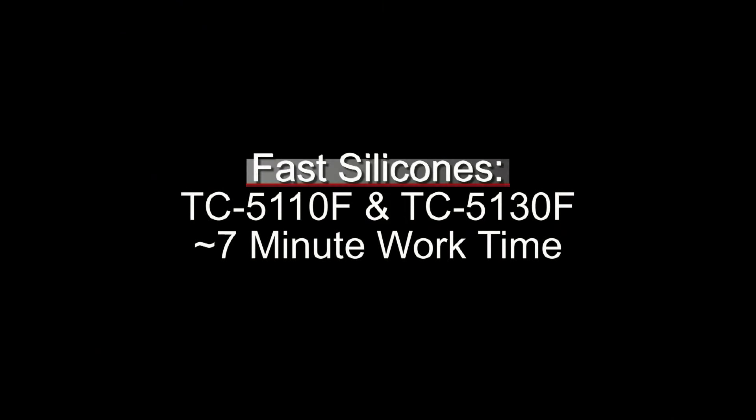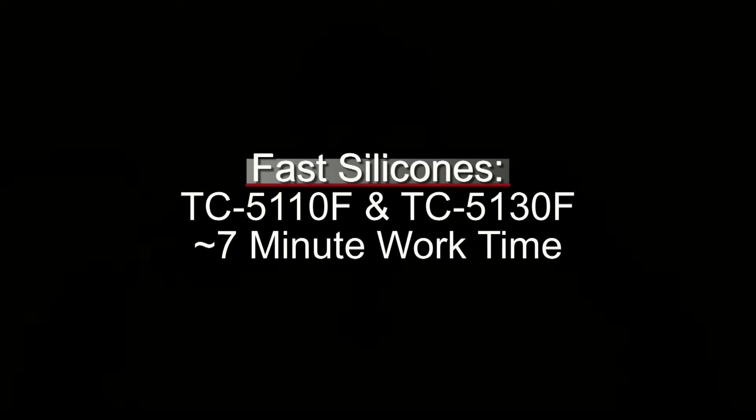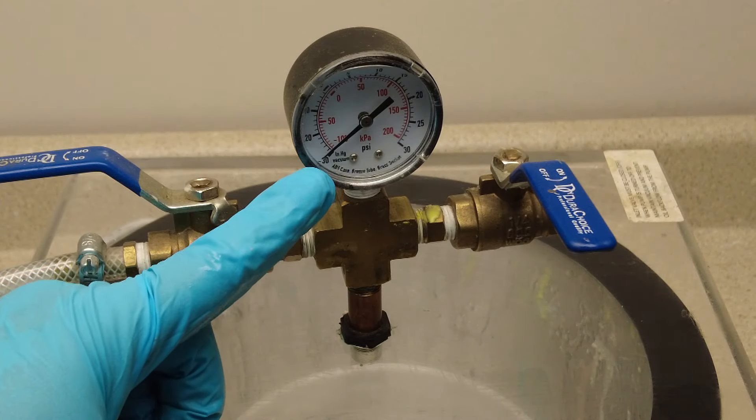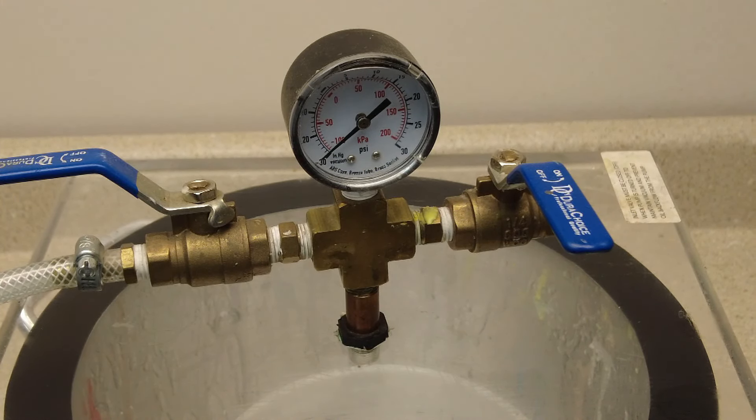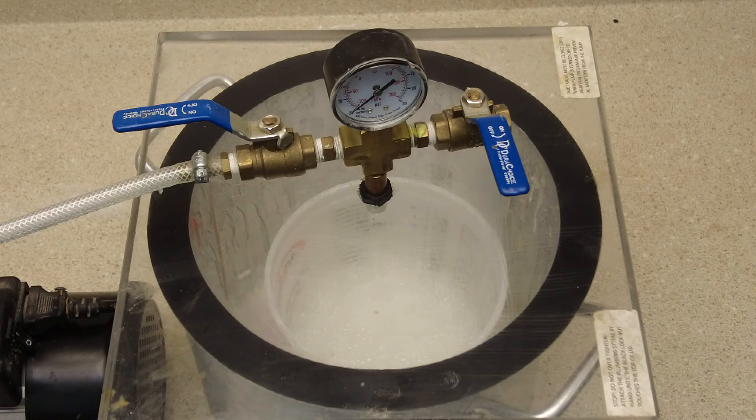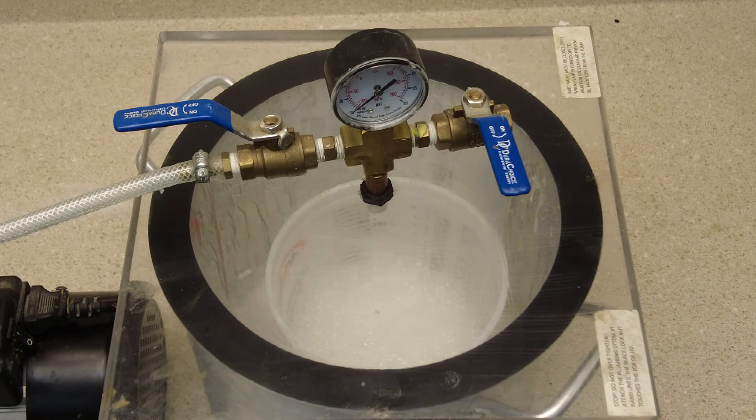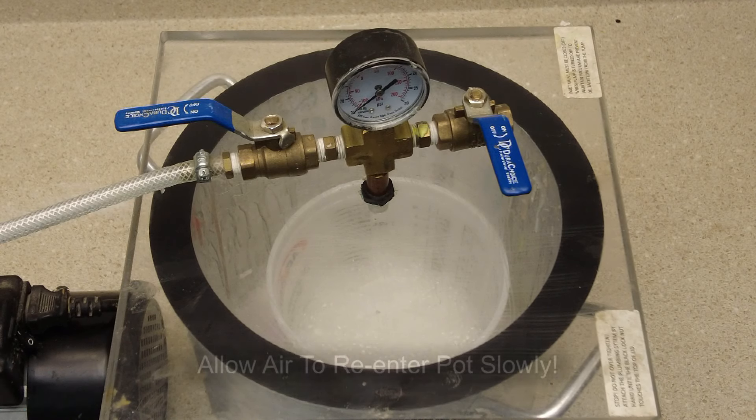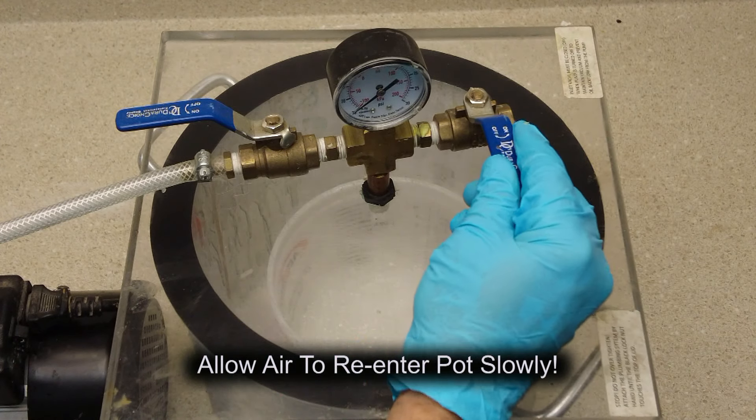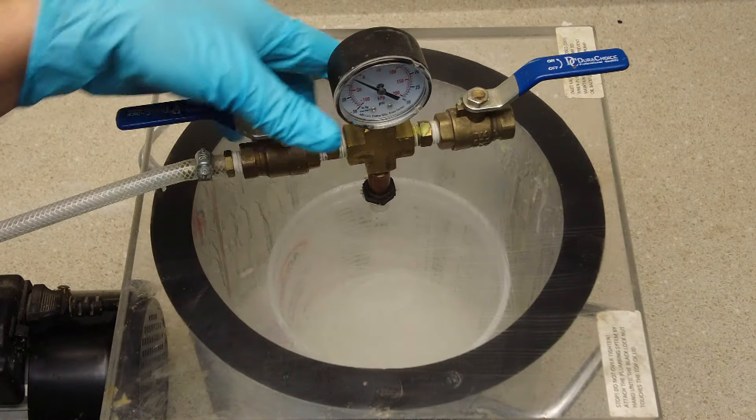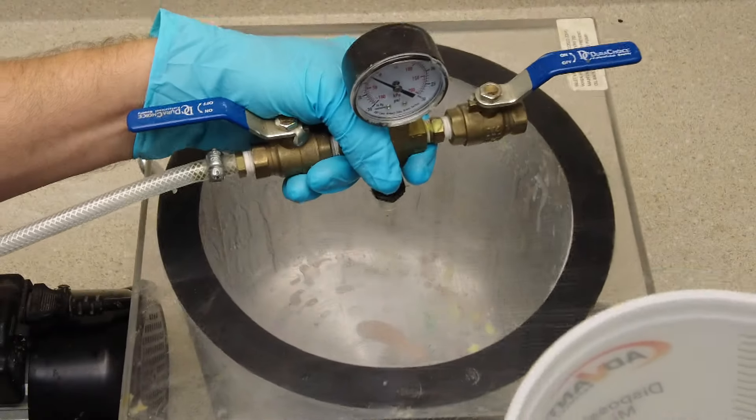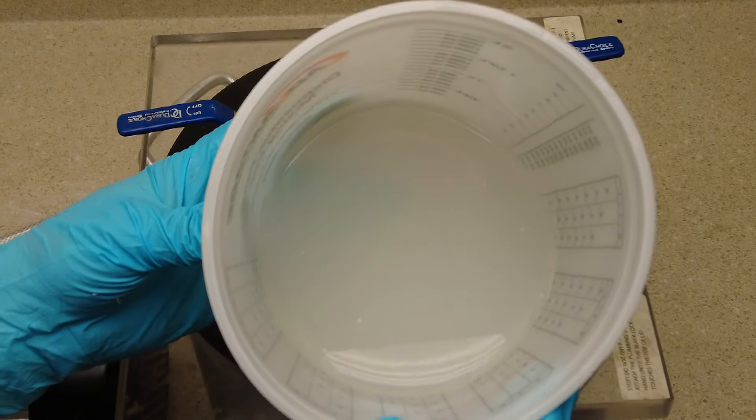This allows fast silicone such as the 5110 or 5130F to be easily degassed within their seven minute working time. Now in order to have a vacuum that will actually get the bubbles out of your mix of silicone, you have to be able to achieve 29 inches of mercury. About as close to a full vacuum as you can achieve on planet earth with regular benchtop equipment. You have to be able to achieve that 29 inches of mercury on your gauge and sustain that for a few minutes in order to evacuate the air out of mixed silicone. Anything less than 29 inches will not remove the air bubbles.